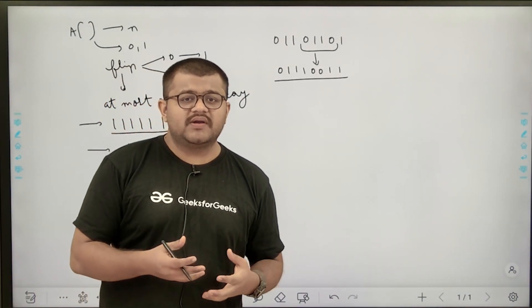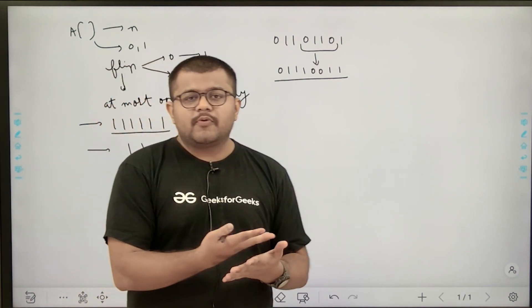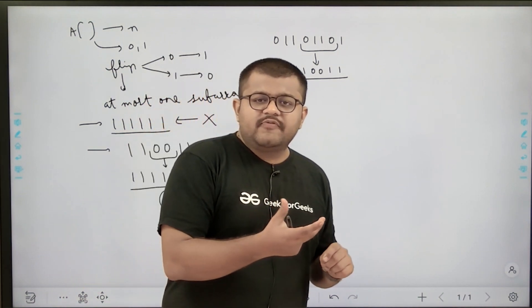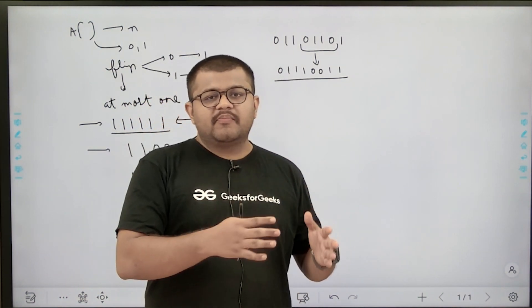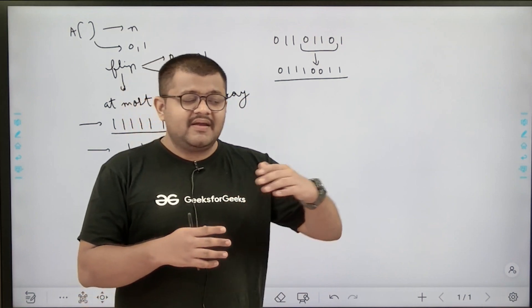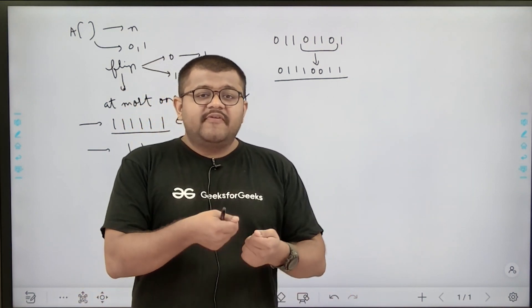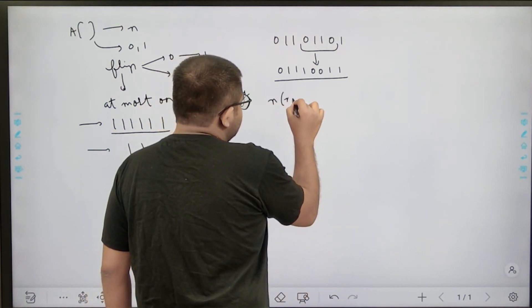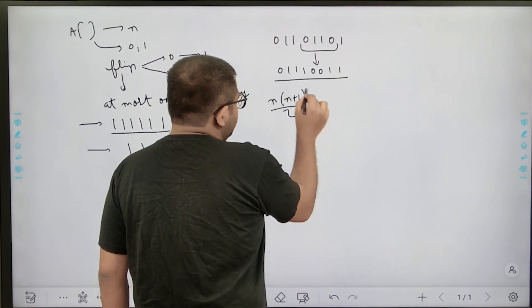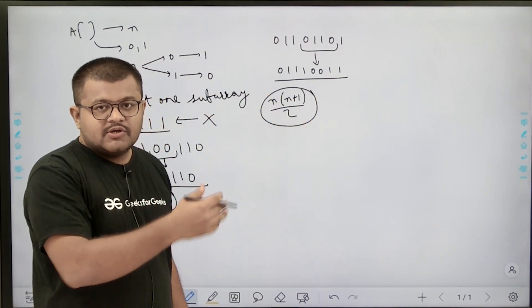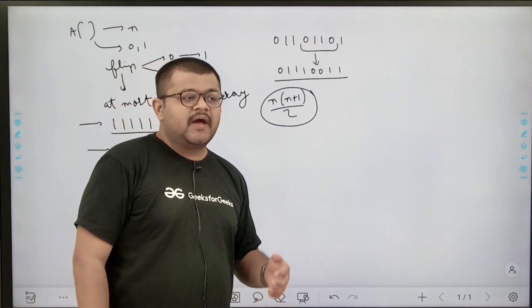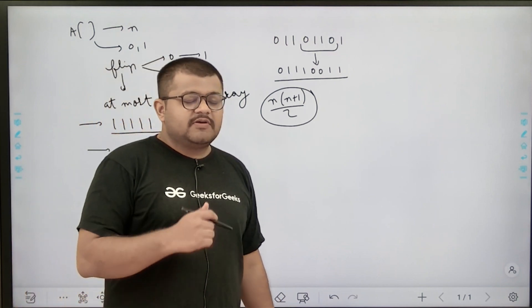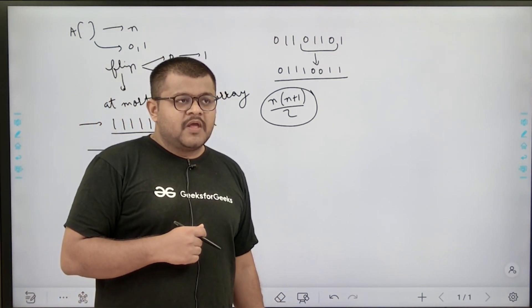Now, thinking about solving this problem, the brute force approach would be: for all possible sub-arrays — that is n*(n+1)/2 sub-arrays — flip each one and see what is the maximum number of ones obtained. But this itself has O(n²) sub-arrays, and doing further operations makes it even worse. Since the expected time complexity is O(n), we need something more efficient.